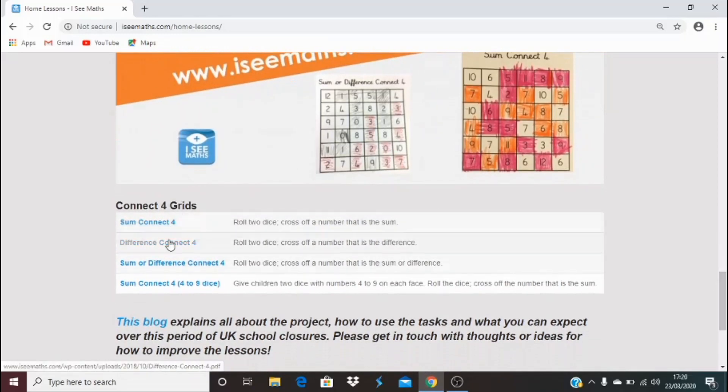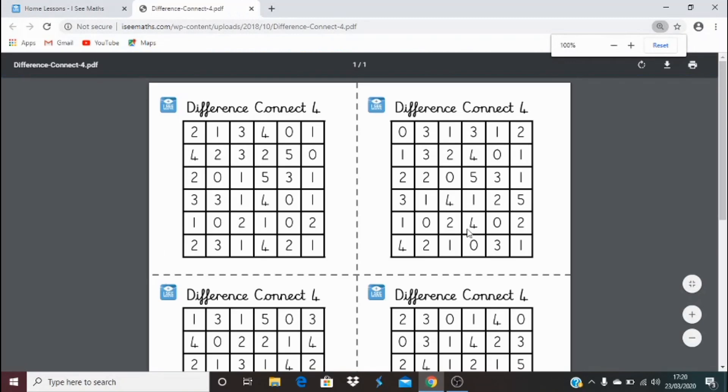Sum Connect Four, Difference Connect Four, the four versions. Let's say you wanted to try Difference Connect Four. If you click on that link it'll open up those grids.